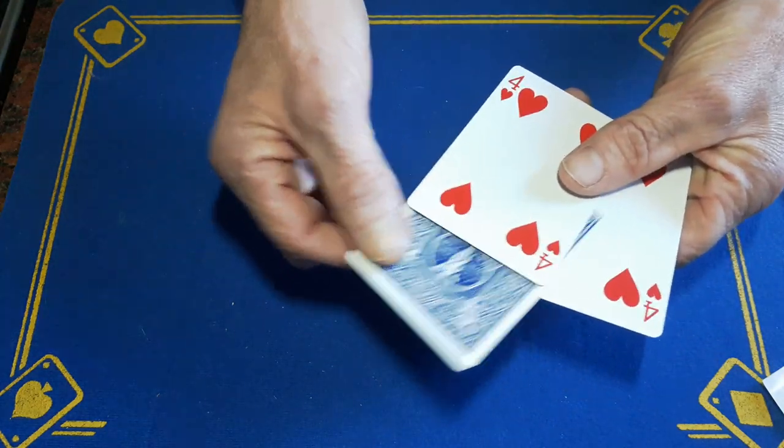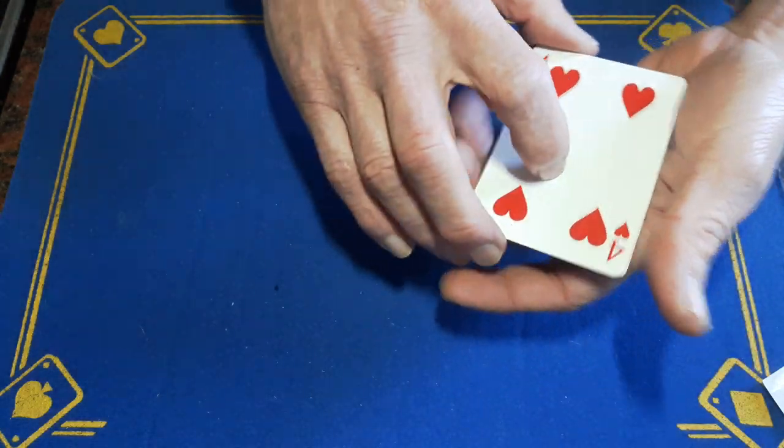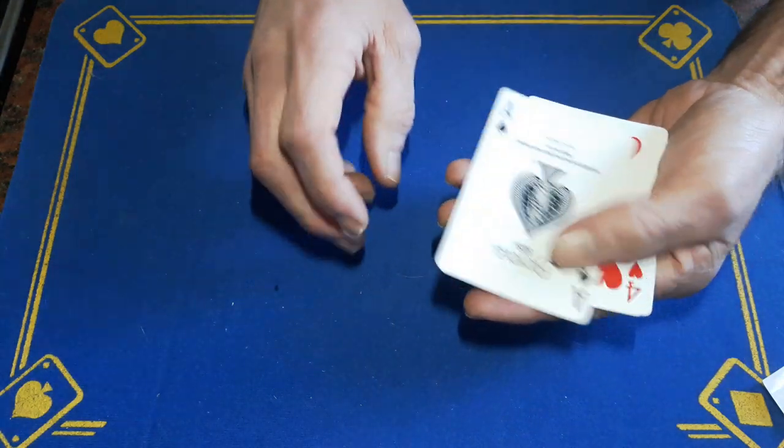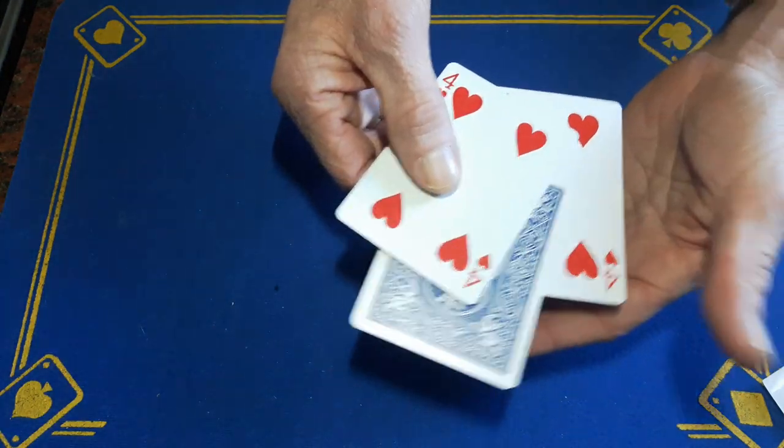So that is a four of hearts, a four of hearts, and an ace of spades. We're going to take the ace and once again we're going to place it between the two fours.